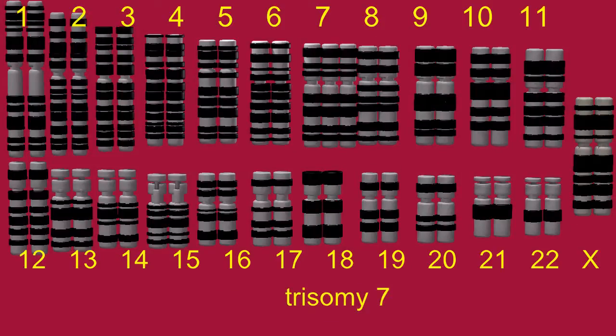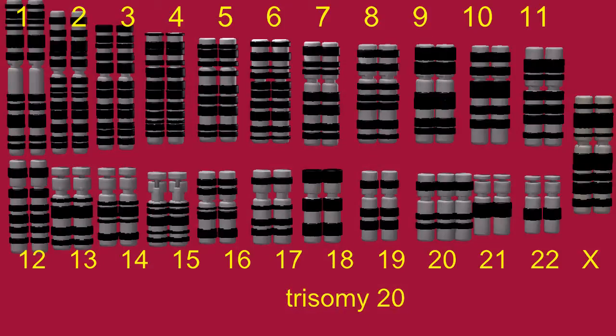Trisomy 7 indicates that there is a third copy of chromosome 7. Trisomy 20 indicates that there is a third copy of chromosome 20.